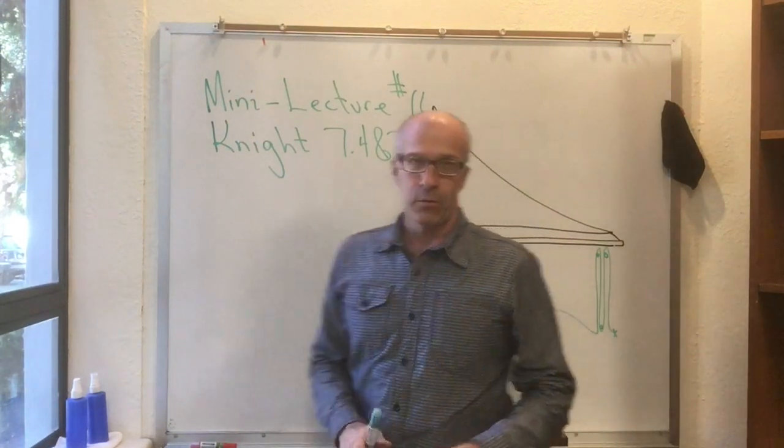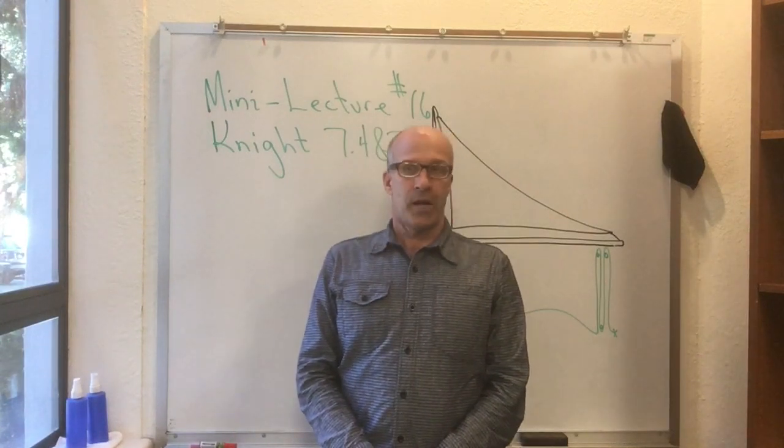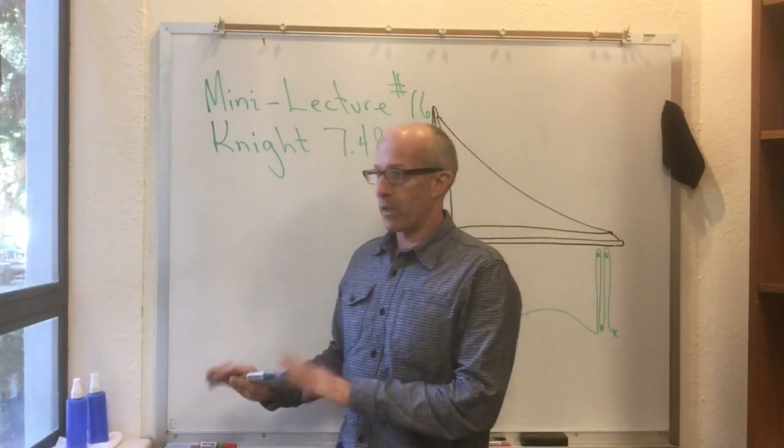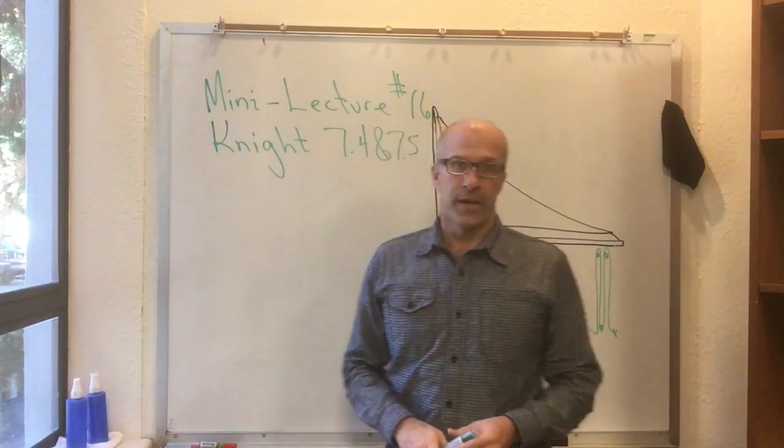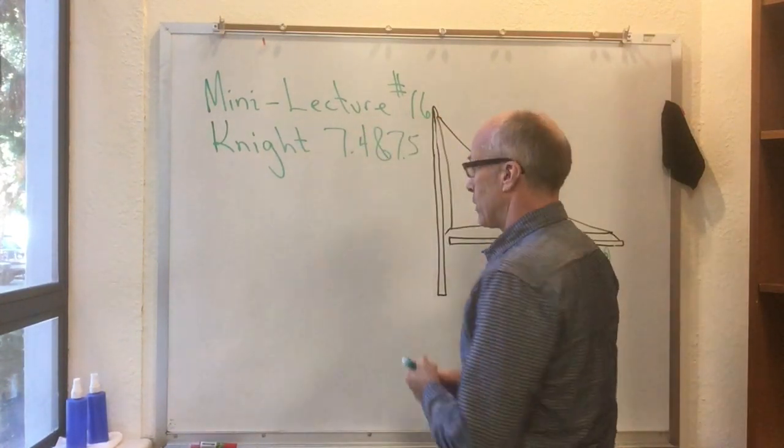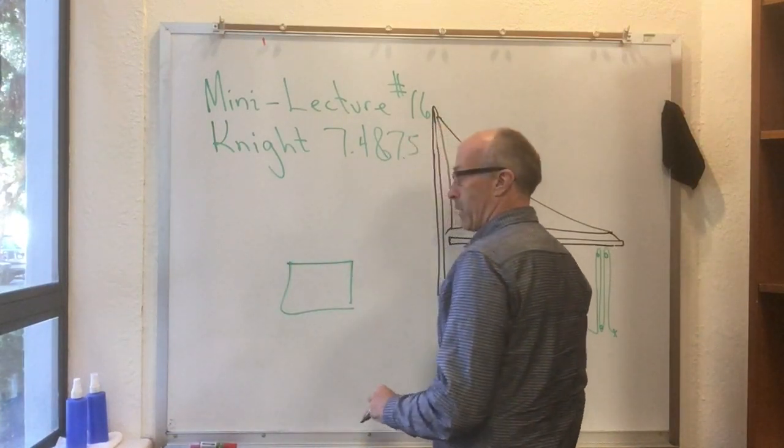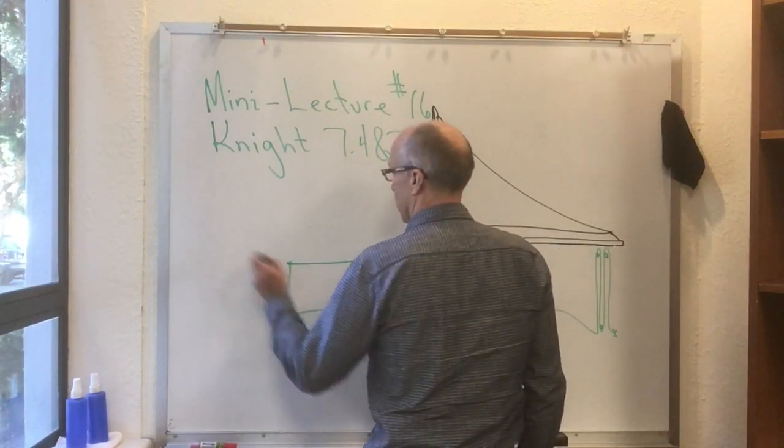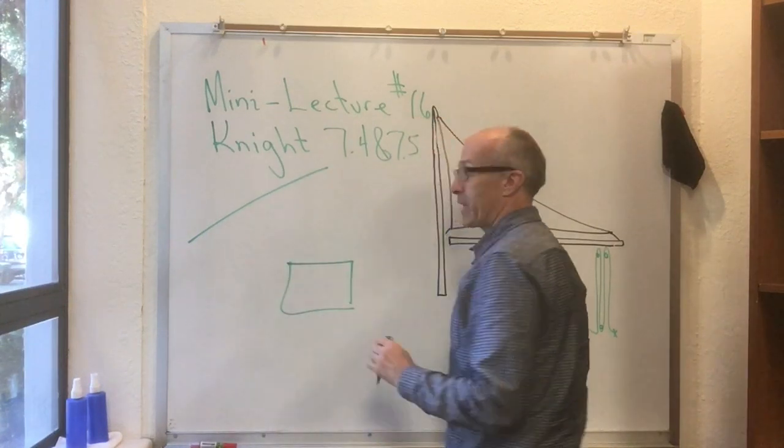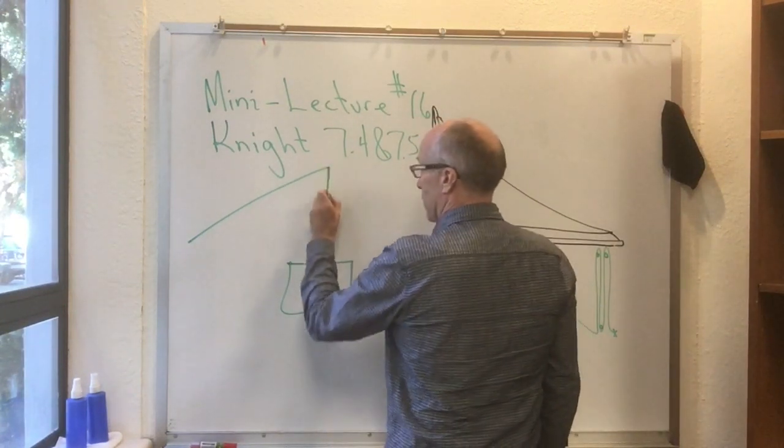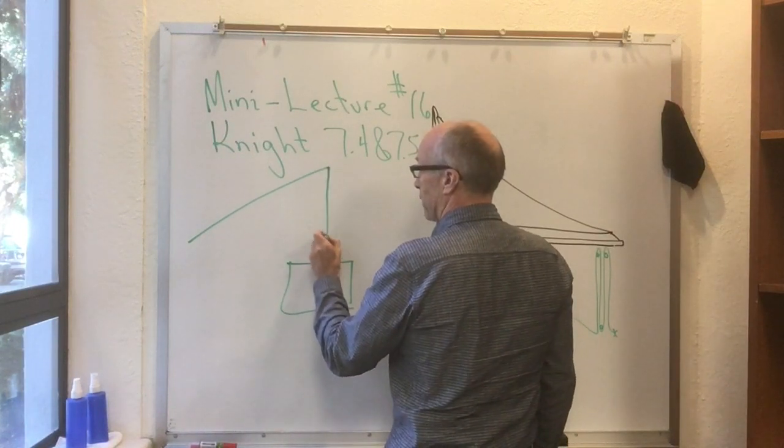In general in this class when we have a rope or a string or a cable, we neglect the weight of the rope, the string, or the cable relative to the weight of the things it's attached to. So if you have an engine block that might weigh hundreds of pounds and you have some kind of crane that you use to lift the engine block out of the car, you neglect the weight, in this case, the chain that connects the crane to the engine block.